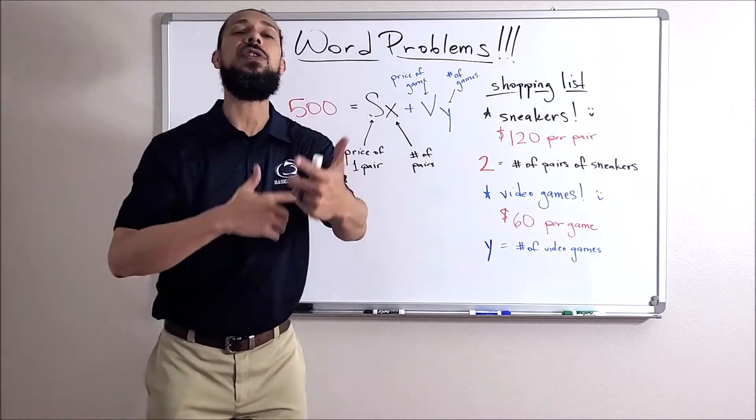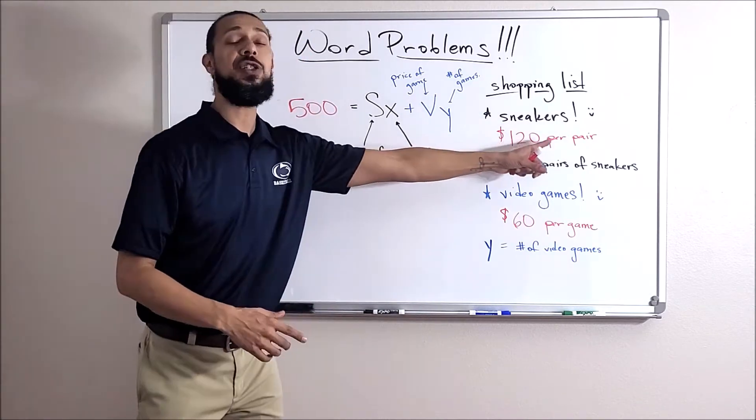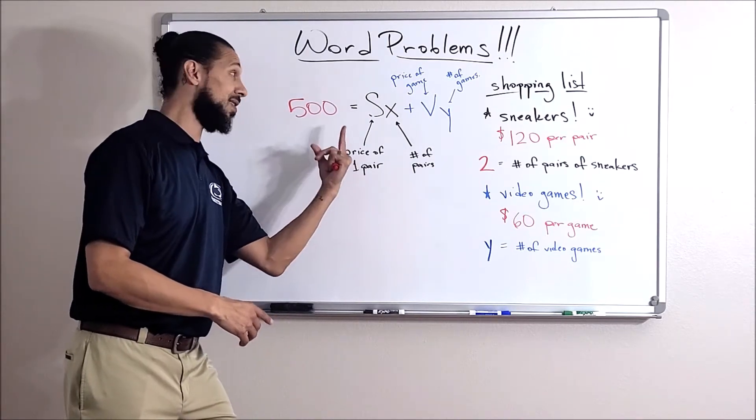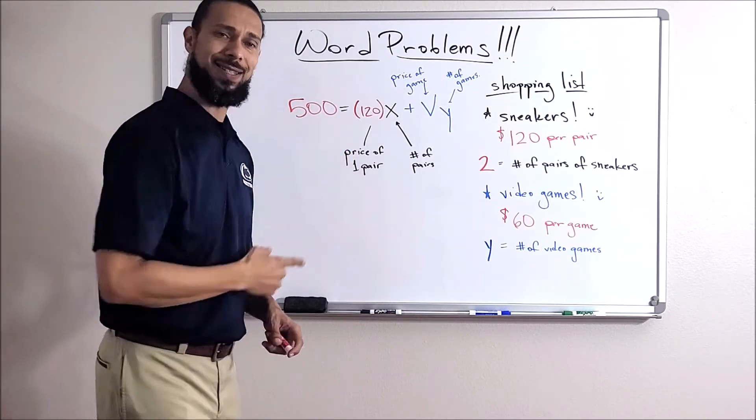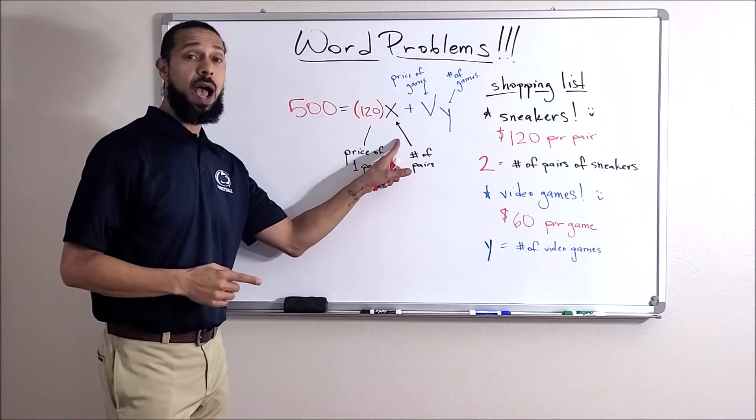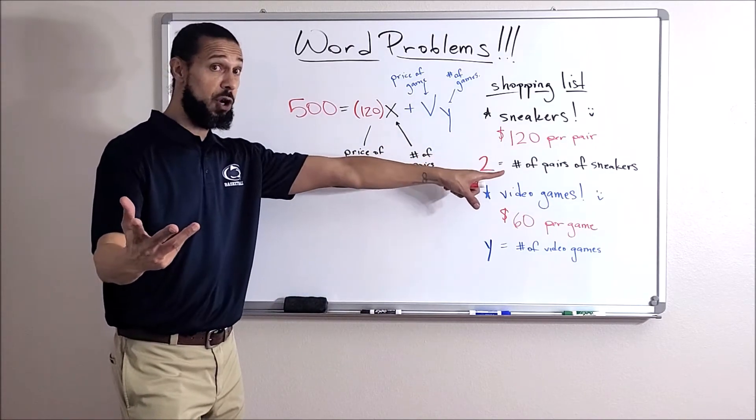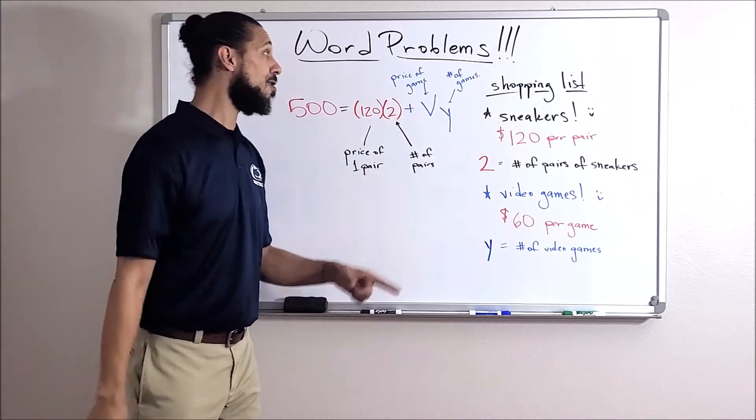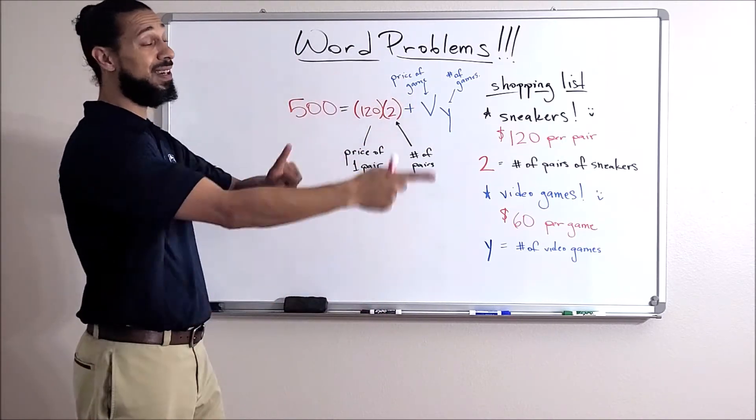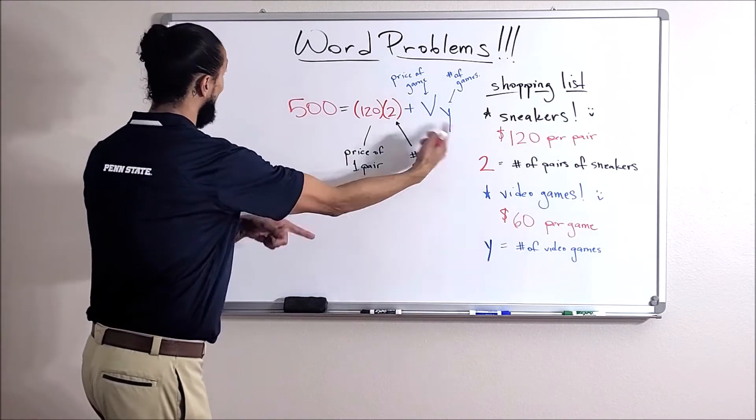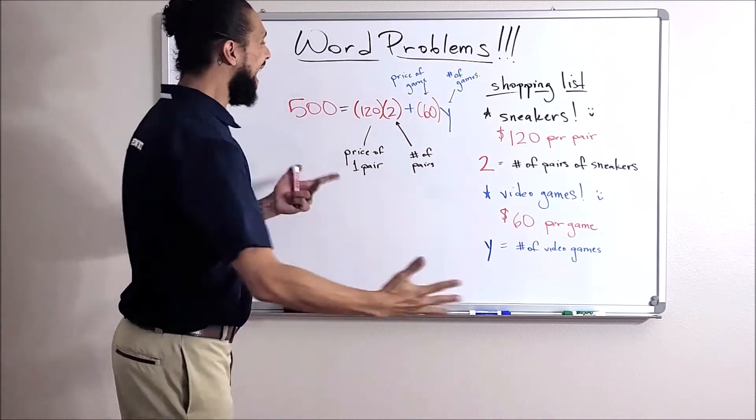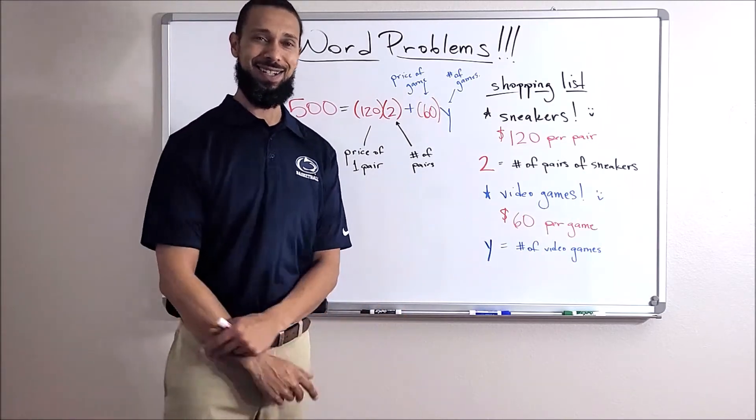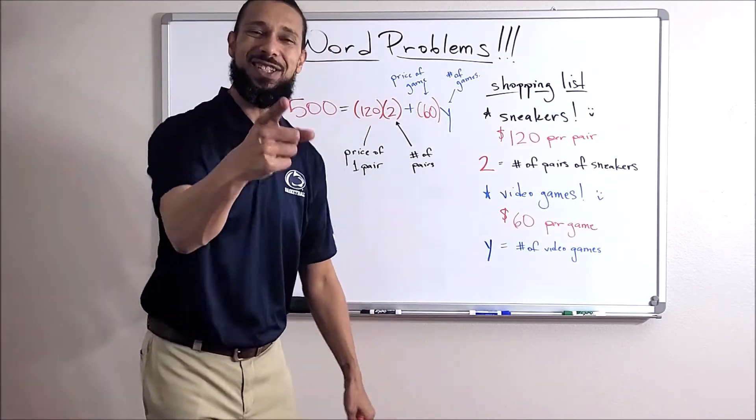Let's talk about where these other numbers would go. $120 per pair of sneakers, where would that go here? Price of one pair of sneakers, that S, yeah exactly right. And then times the number of pairs that I'm getting - I'm getting two pairs, so yes exactly right. Moving right along, do I know the price of one game? I think I do, yes exactly right.